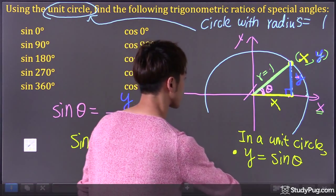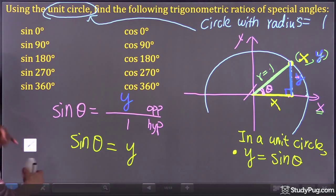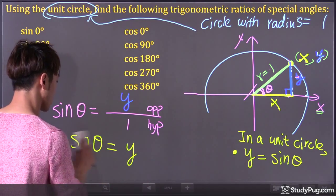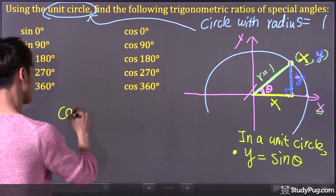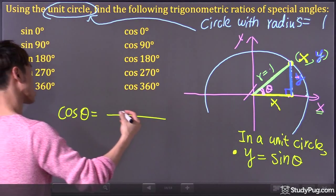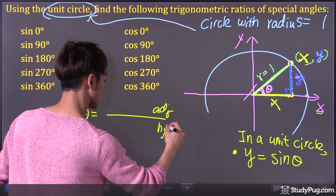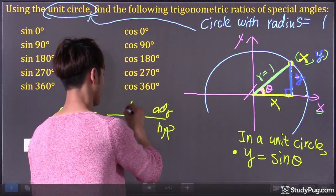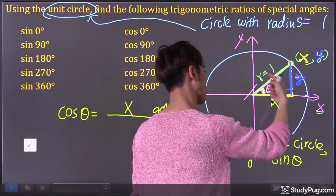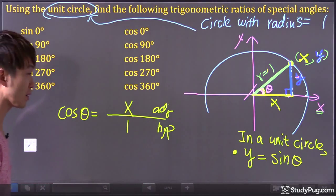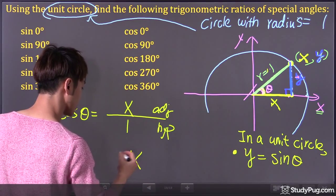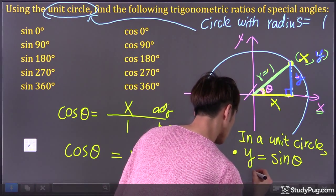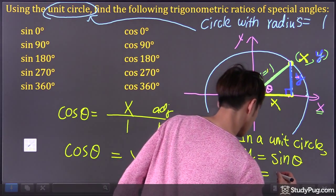Now, what if we write the expression for cosine theta by looking at this triangle? Cosine theta, using SOH-CAH-TOA, is adjacent over hypotenuse. Looking at this reference angle, adjacent to it is X. Hypotenuse, the one across from 90 degrees, is the radius, which is 1. So X divided by 1 equals X, meaning X equals cosine theta. In a unit circle, the X-coordinate is represented by cosine theta.